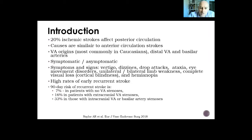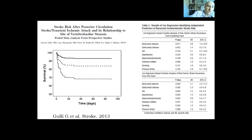There are also high rates of early recurrent stroke. The 90-day risk of recurrent stroke is 7% in patients with no vertebral artery stenosis, 16% in patients with extracranial vertebral artery stenosis, and 33% in patients with intracranial vertebral artery or basilar artery stenosis. The independent risk factor for recurrent vertebral artery stroke is intracranial stenosis.